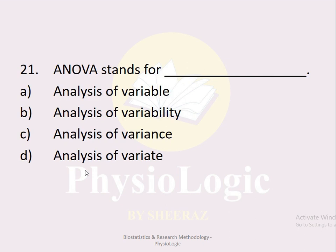MCQ number twenty-one: ANOVA stands for: option a analysis of variable, option b analysis of variability, option c analysis of variance, option d analysis of variance. The correct option is option c, analysis of variance.